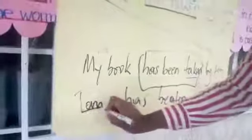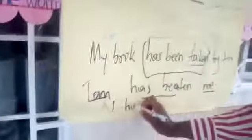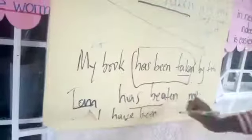This is the subject, this is the verb given, this is the object. The object will become the subject and the subject will become the object. So we say: 'I have been beaten by Tom.' This is how we change from active to passive.